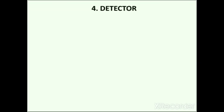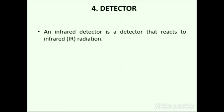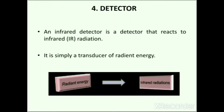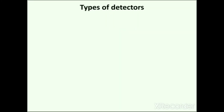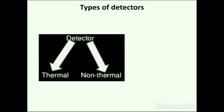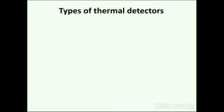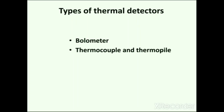The next important part of the IR instrument is the detector. An infrared detector reacts to infrared radiation — it is simply a transducer of radiant energy, converting energy from one form to another. There are two types of detectors used in IR spectrophotometers: thermal and non-thermal detectors. Types of thermal detectors include bolometer, thermocouple and thermopile, pyroelectric detectors and Golay cell.